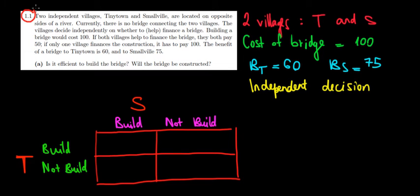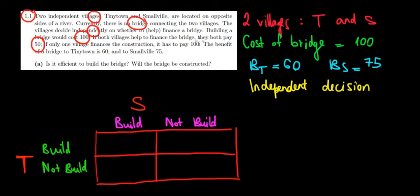Let's have a look at question one in this video. We have two villages, Tiny Town and Smallville, that are located on opposite sides of a river. There is no bridge between them and they decide independently whether they want to finance a bridge. Building the bridge costs 100 euros. If they both help finance the bridge they both pay only 50, but if only one of them finances it has to pay the entire 100. The benefit of a bridge to Tiny Town is 60 euros and to Smallville is 75.